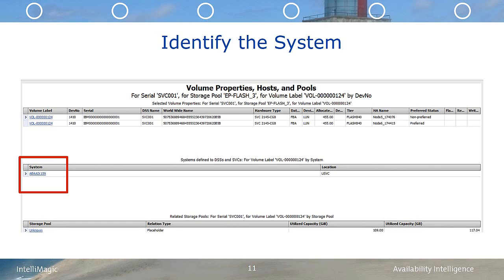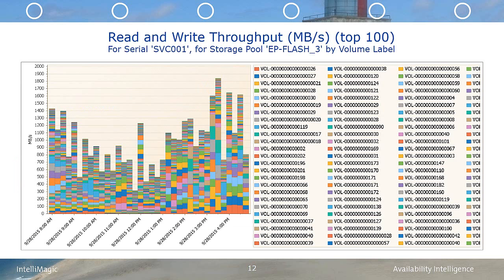In this next chart, we're going to fast forward a week and look at what the EP Flash underscore 3 Storage Pool looked like when the problem was resolved. What we see is that the workload profile changed dramatically as the workload from those top four volumes simply disappears. So now the question is, did this reduction in throughput improve the front-end response time?